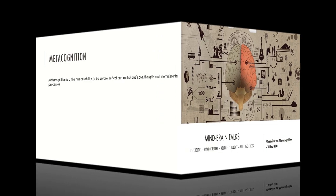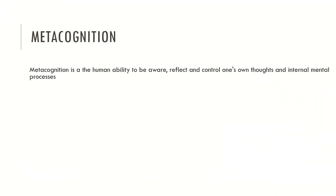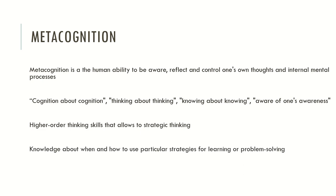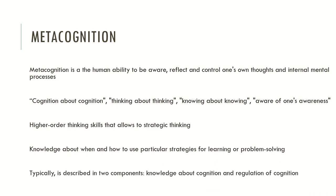Metacognition is a human ability to be aware, to reflect, and to control one's thoughts and internal mental processes. Usually we can call this cognition about cognition, thinking about thinking, knowing about knowing, aware of awareness. Typically it is viewed as a higher order thinking skill that allows strategic thinking. Also, it can be defined as knowledge about when and how to use particular strategies for learning or problem solving, and typically it may be described by two components: knowledge about cognition and the regulation of cognition.